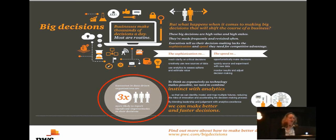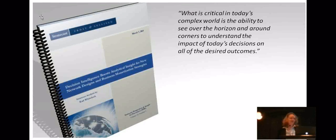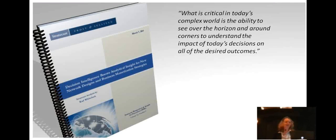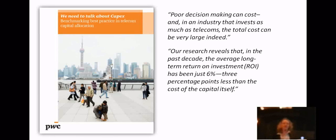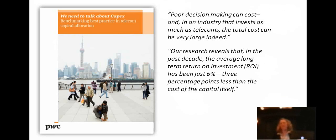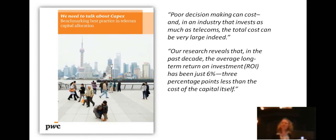And PWC has asserted that on average, the typical executive thinks about three of these big decisions per month. And don't take my word for it, but this is really an exploding concept. Here's PWC, who's talking about big decisions and how executives in data-driven organizations are three times more likely to report significant improvement in their decisions. This is about a data-driven culture. And this is really kind of the space that I'm sitting in. How do we take that concept of data-driven culture and add some structure to it? Carl Whitlock on Stratocast wrote a report saying it's critical to see over the horizon and around the corners to understand the impacts of today's decisions on all of the desired outcomes. This one's really damning. This is another PWC report, specifically about telecom capex. They say poor decision making cost, and in an industry that invests as much as telecoms, the total cost can be very large indeed.